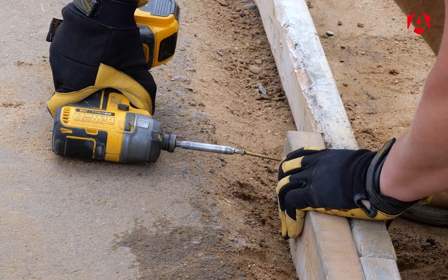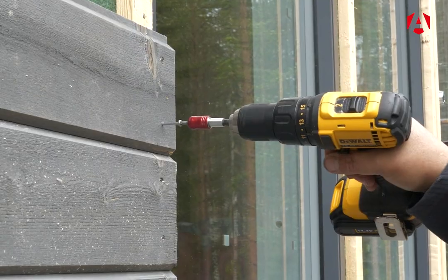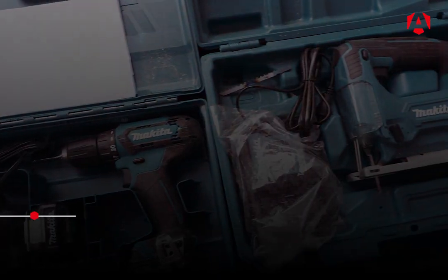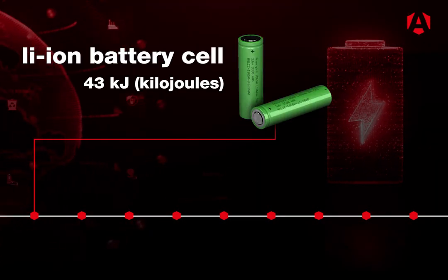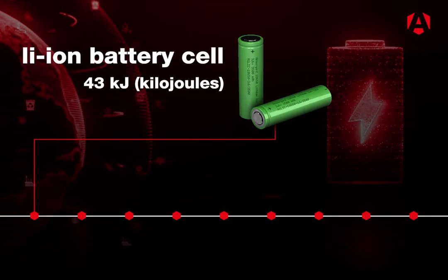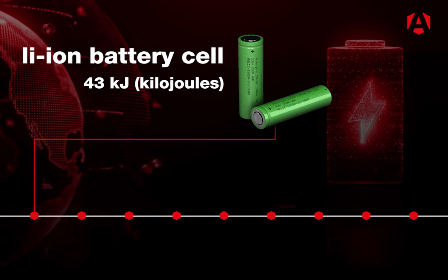This commonly used Li-ion cell stores up to 43 kilojoules of energy. A battery is made up of many cells like this one.